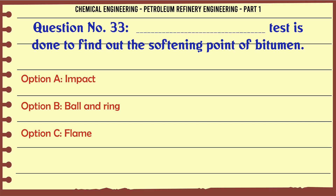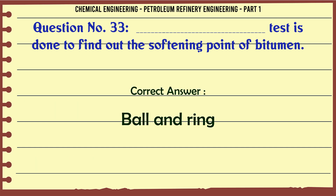Which test is done to find out the softening point of bitumen? A. Impact, B. Ball and ring, C. Flame, D. Viscosity. The correct answer is Ball and ring.